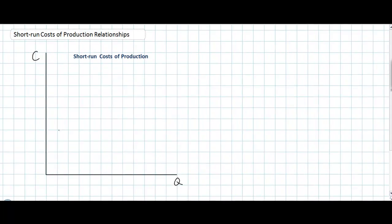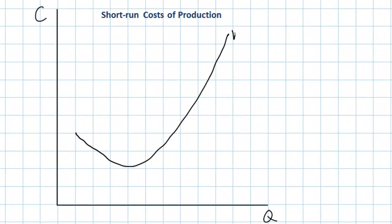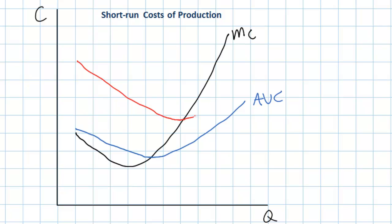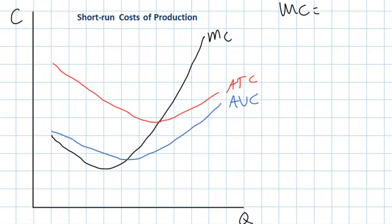Specifically, we're going to look at marginal cost, average variable cost, and average total cost. Let's start off with marginal cost. There is a range of output over which the firm's marginal cost of production — in other words, the cost of each additional unit produced — declines. This range, the yellow range of our marginal cost curve, represents the range over which the firm experiences increasing marginal returns to labor.